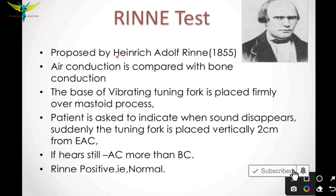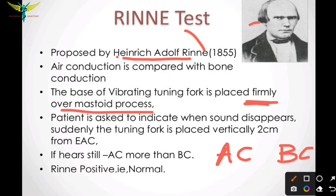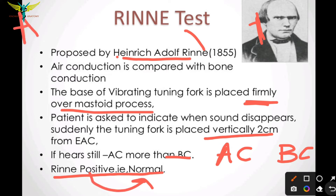It was proposed by Heinrich Albrecht Rinne, that is why the name indicates Rinne. In this test, the air conduction is compared to that of bone conduction. The base of the vibrating tuning fork is placed firmly over the mastoid process, that means behind the ear. The patient is asked to indicate when the sound disappears. Suddenly the tuning fork is placed vertically two centimeters from the external auditory canal. The Rinne's test becomes positive, meaning the positive Rinne test indicates normal.